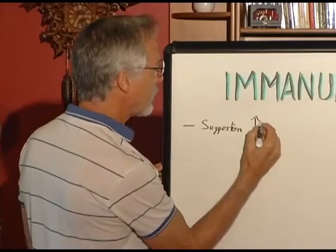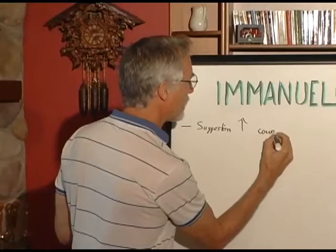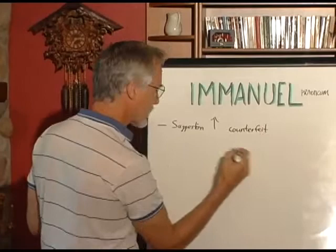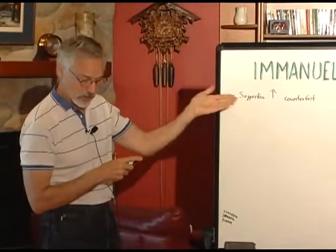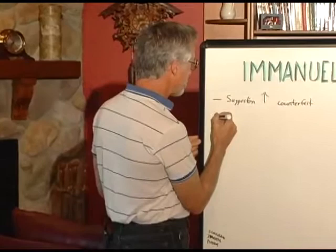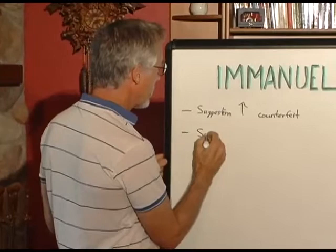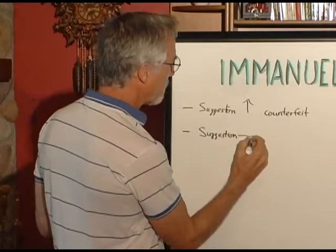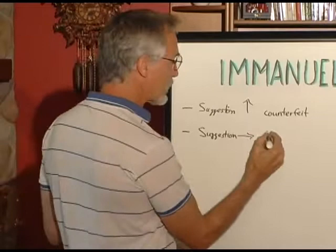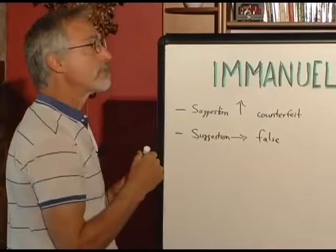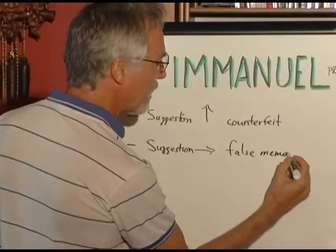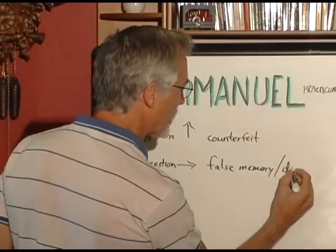Suggestion can increase trouble with counterfeit Jesus — if you're being suggestive, you can increase the risk of the person imagining or making stuff up on their own. That's a concern people raise, and it's important to address. There's also a risk of actual false memory — either creating the perception of an event that didn't happen, which causes all kinds of trouble, or distorted memory.